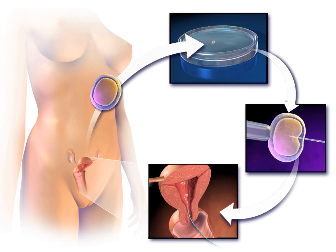Sperm donation may provide the source for the sperm used in IVF procedures where the male partner produces no sperm or has an inheritable disease, or where the woman being treated has no male partner. Preimplantation genetic diagnosis involves the use of genetic screening mechanisms such as fluorescent in situ hybridization or comparative genomic hybridization to help identify genetically abnormal embryos and improve healthy outcomes.